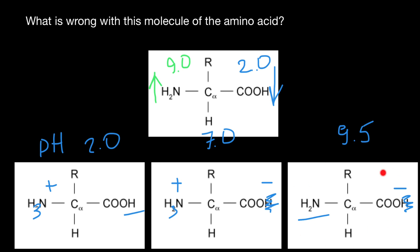So amino acid can be in these three states: below pH 2, above pH 9.0 or 9.5, and at neutral pH it's going to be in zwitterion form. But we never would be able to see the form which is shown here.